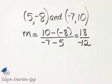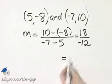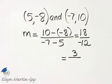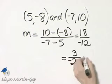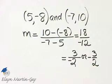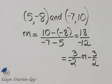There is a common factor of 6 that I can divide out. 18 divided by 6 is 3, negative 12 divided by 6, that's negative 2, and we could write this as negative 3 over 2. So, the slope is negative 3 halves.